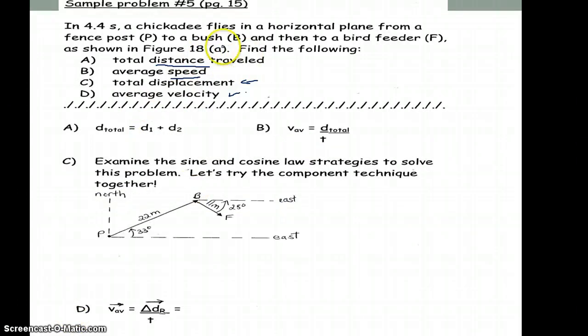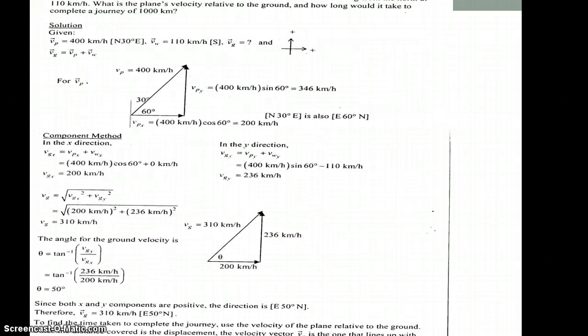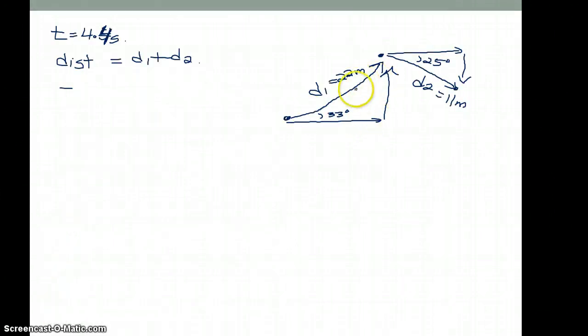So in terms of vector components, we're going to take a look at our first example. In 4.4 seconds, a chickadee flies in a horizontal plane from a fence post to a bush and then to a bird feeder. Displacement one is 22 meters, displacement two is 11 meters. First we want to find the total distance, then the average speed, then the displacement, and then the average velocity. Unfortunately, I do not have my whiteboard with me, so I will just use the PowerPoint for now. Sorry, the drawing is not very accurate.